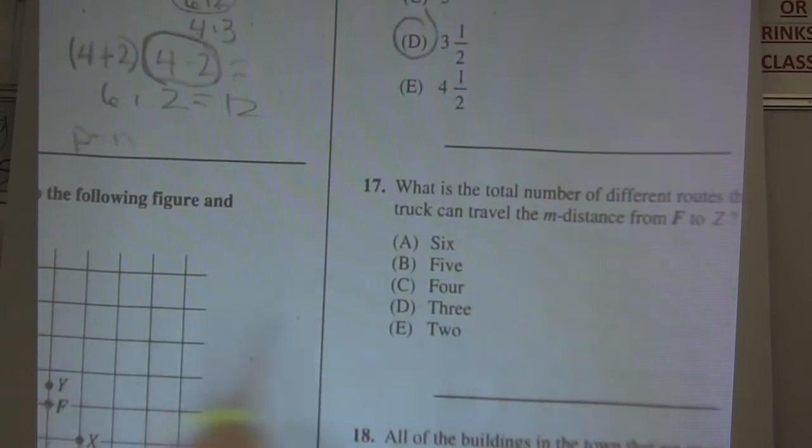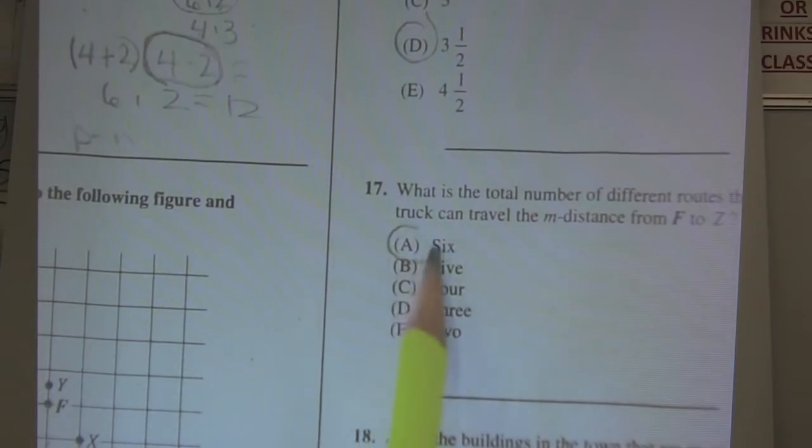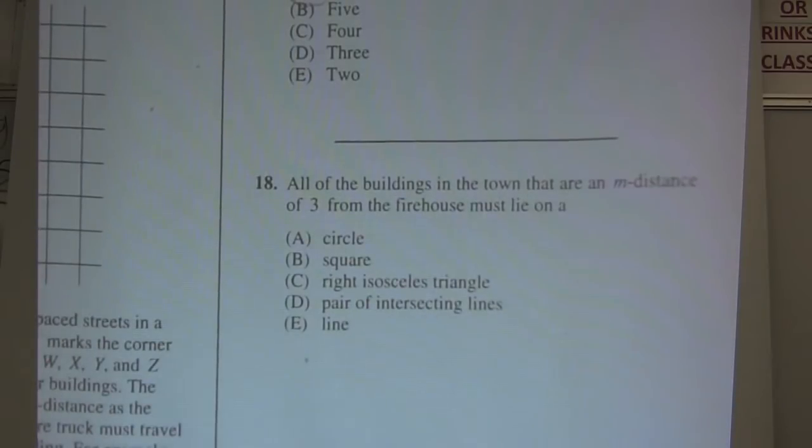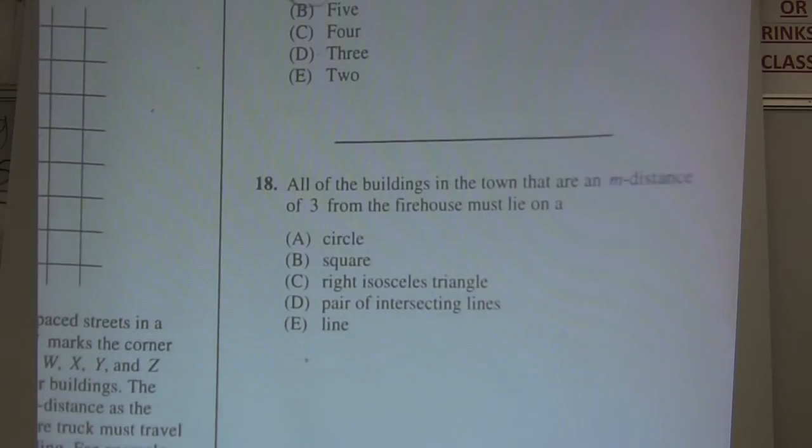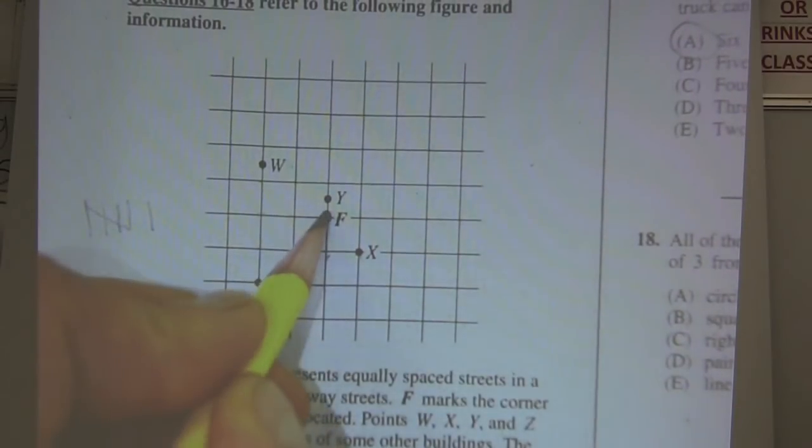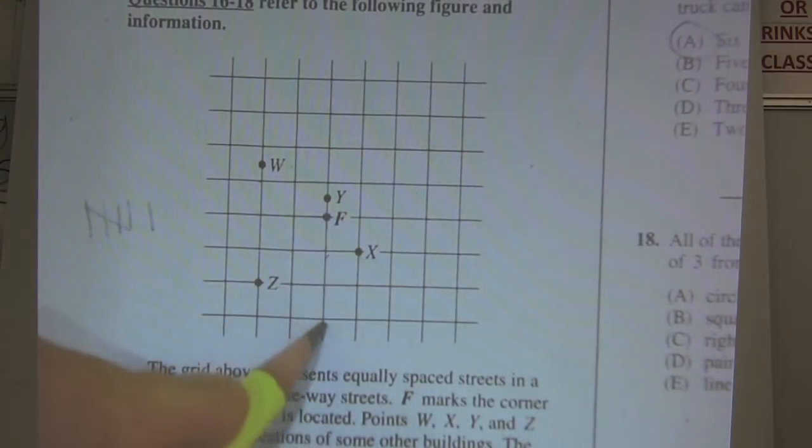All right, 18. Last one on this video here. This one's a hard one I remember. All of the buildings in the town that are an m-distance of 3 from the firehouse must lie on a... Okay, so three from the firehouse. So I got to go back and list all the ones that are three from the firehouse. So let me go three: 1, 2, 3, there is one. 1, 2, 3, there is another.